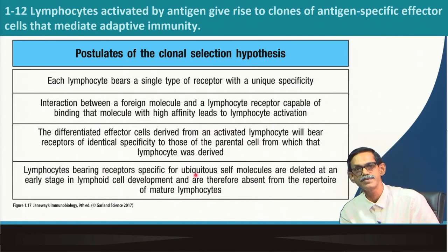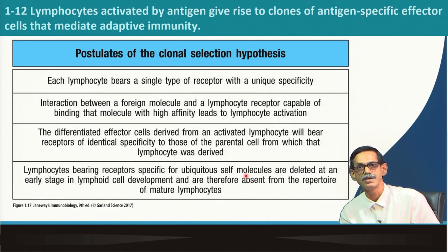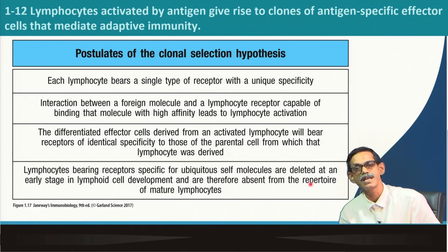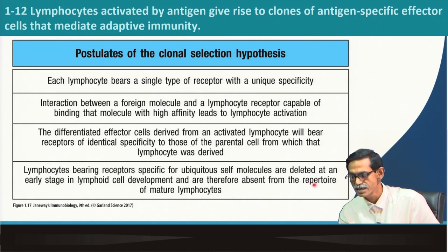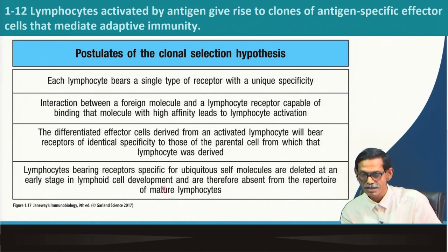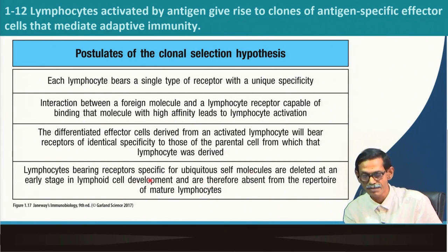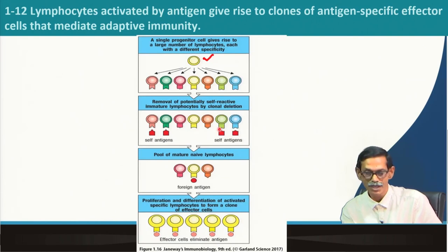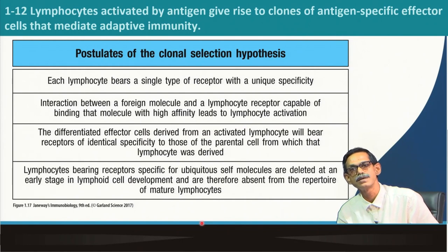Fourth: lymphocytes bearing receptors specific for ubiquitous self-molecules are deleted at an early stage of lymphoid development and are therefore absent from the repertoire of mature lymphocytes. I am giving a small task: we say library — cDNA library, genomic library — in genetics. Here we say 'repertoire.' Find the difference between library and repertoire — you can look in a dictionary or on the internet. They are similar but we do not say 'library' in immunology. If a cell interacts with self-molecules, that cell will be deleted early in development. All these events together are called clonal selection hypothesis.